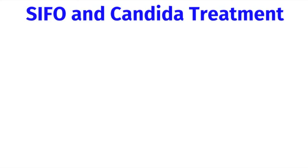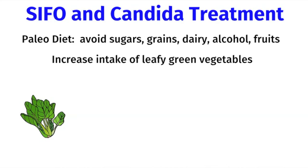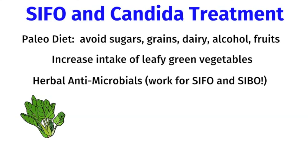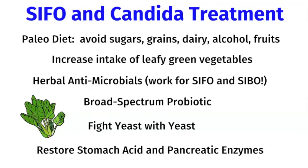The good news is SIFO and Candida are treatable conditions. I put my patients on a paleo diet so that they're avoiding all the things yeast love — like sugars, grains, dairy, and alcohol. I even have them avoid fruit for the first month, then they can add in low-glycemic index fruit like berries and apples. I encourage increasing intake of leafy green vegetables like arugula, chard, and kale, because these prevent the growth of yeast. Herbal antimicrobials are really effective at treating yeast overgrowth and work for both SIFO and SIBO. I give patients a broad-spectrum probiotic to help strengthen the bacterial microbiome. We can also fight yeast with yeast — using a good yeast probiotic called S. boulardii to push out other yeast from the body. Finally, we want to restore stomach acid and pancreatic enzymes because these are great defense mechanisms against yeast.